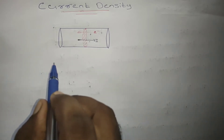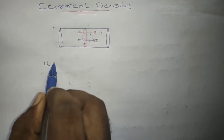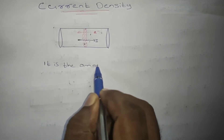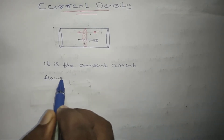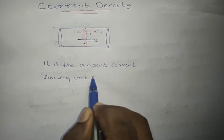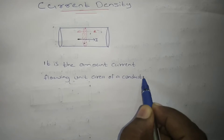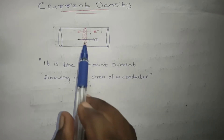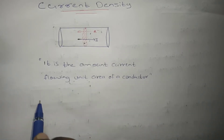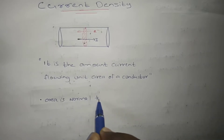Current density means it is the amount of current flowing through unit area of the conductor. And this area is normal to the current. So the condition is: the area is normal to the current.